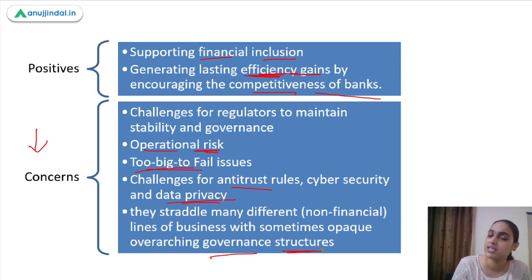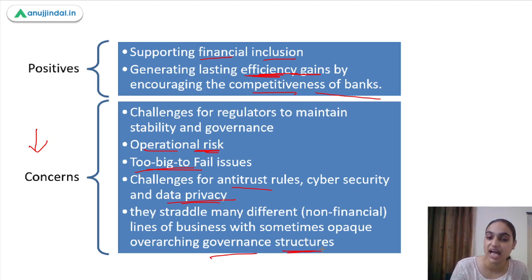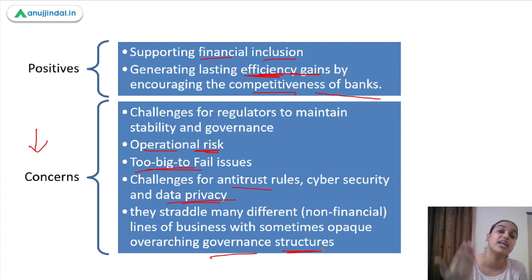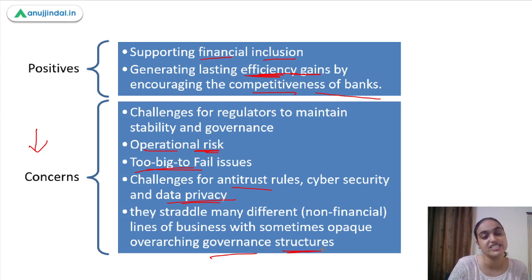Additionally, as banks are governed by specific acts limiting them to banking activities, big tech firms — which operate across non-financial lines of business with sometimes opaque governance structures — may not meet the same governance standards when offering financial products, potentially creating further stability risks.